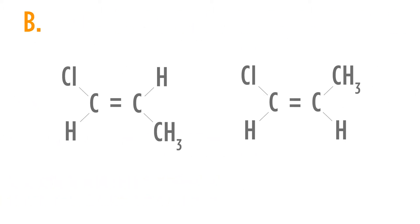Let's look at the next. Here we have a double bond species. When we have a double bond, we cannot rotate around that bond. That means in the first case, where we have the chlorine facing up and the methyl facing down, there is no way to change that into the second structure, where both the chlorine and the methyl are going up. The connections are the same — each atom is connected to the same atoms — but where they are connected in space is different. In the first case, opposite sides: trans. In the second case, same side: cis. This would be a cis-trans isomer.